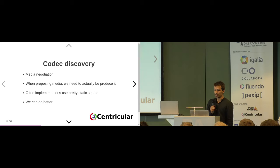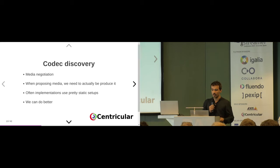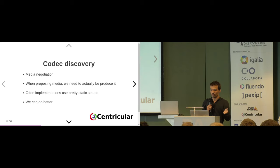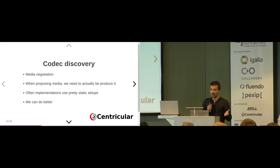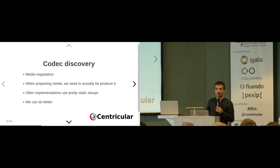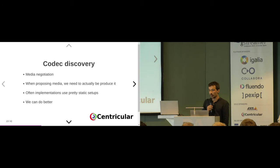Another design goal was for the element to perform codec discovery. When producing a stream, you want to propose a bunch of codec options — VP8, VP9, H264, etc. — but you want to make sure you can actually produce them. In many customer projects we simply used static setups with a single format connected to WebRTC Bin. Here we wanted something more powerful where we would propose multiple formats and know we can actually produce them.